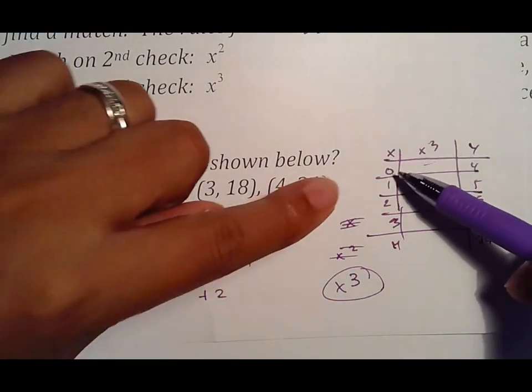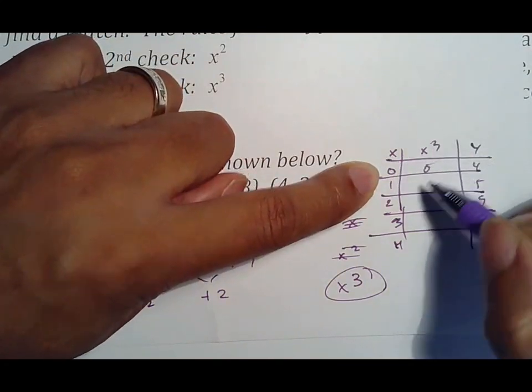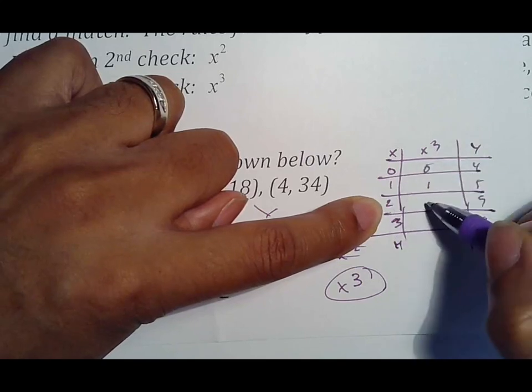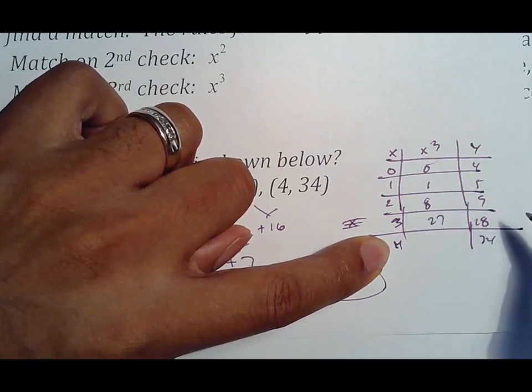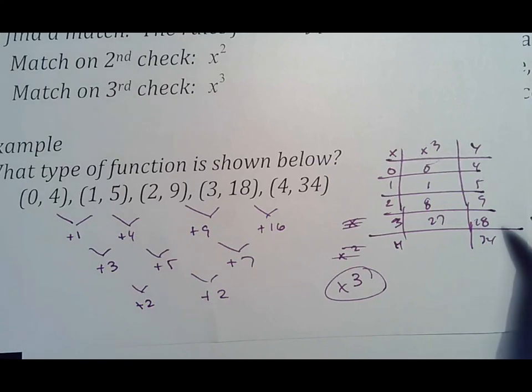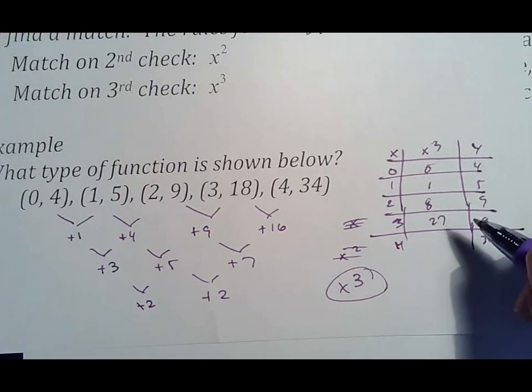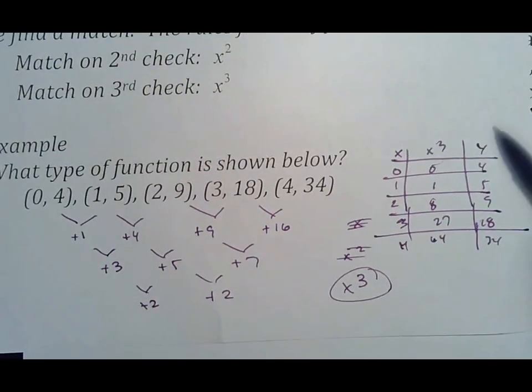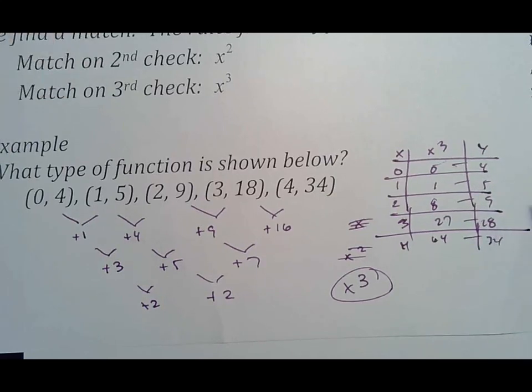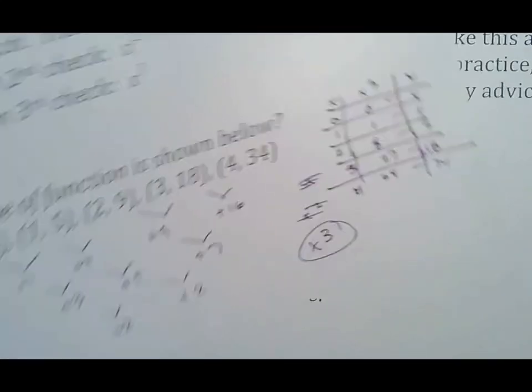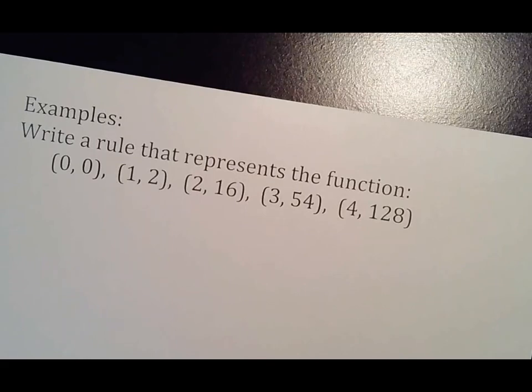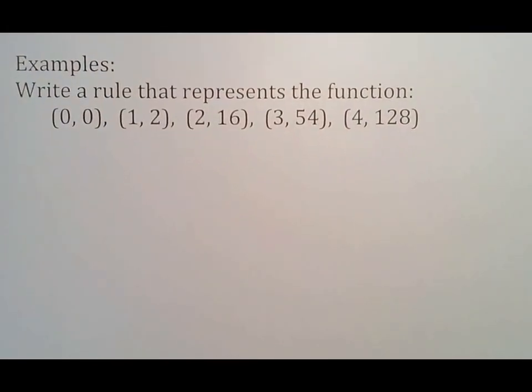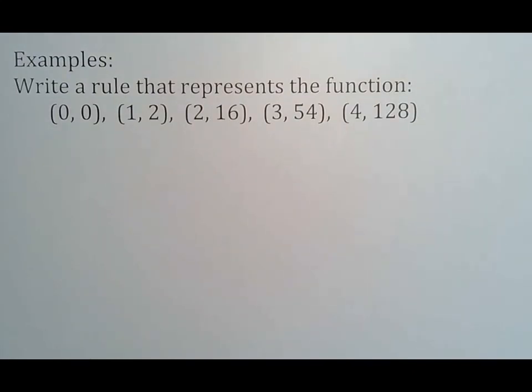This rule says that what we want to do is take our x and cube it. 0 times 0 times 0 is 0. 1 times 1 times 1 is 1. 2 times 2 times 2 is 8. 3 times 3 times 3 is 27. 4 times 4 times 4 is 64. When you do that, you would then be looking for the change between these numbers here. Let's just go ahead and get to the point here and move from there.